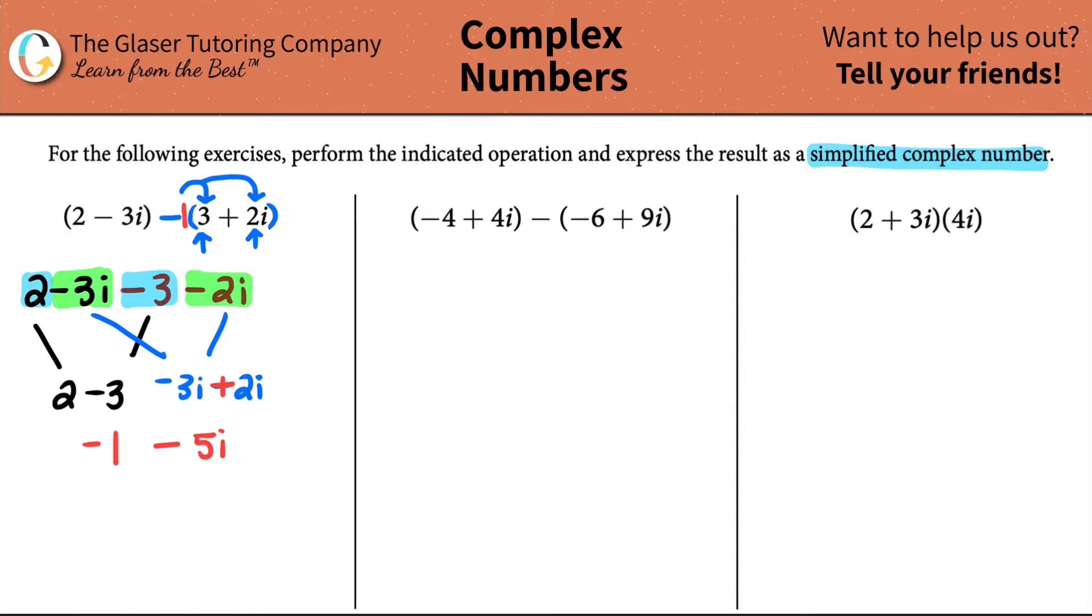I have this negative three i, and notice how I'm always taking the sign into consideration. Negative three i, and then I have a negative two i. I have to add those together. A negative three i minus two i would be a negative five i. When you're adding or subtracting like terms, remember you don't add the i's so it wouldn't turn into i squared. That's if you multiply. Here we're just adding the coefficients. Negative three minus two is a negative five.